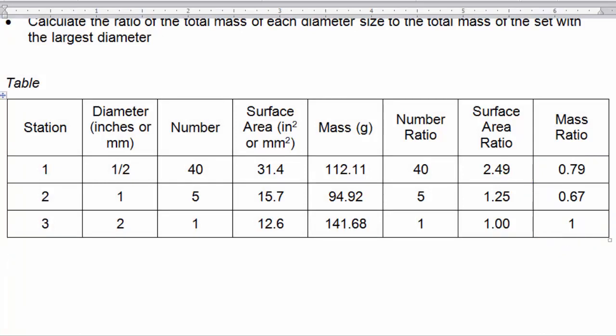After the table is completely filled out, we can observe some of the relationships between marble sizes, counts, surface area, and mass. For example, although the half-inch marbles have the highest count, each individual marble contributes less to its overall surface area and mass than the 2-inch marble.